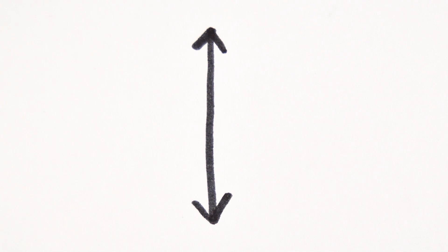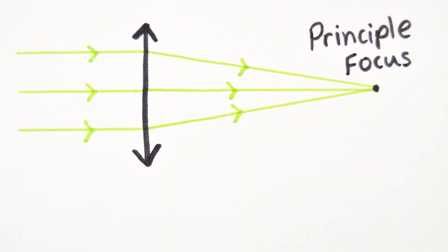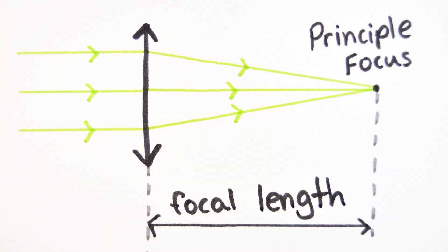Converging lenses are shown using this symbol. A ray diagram can be drawn to show the refraction of light through the lens. Light rays that travel through them produce a real image as they all meet at the same point, called the principal focus. The distance between the centre of the lens and this point is called the focal length.